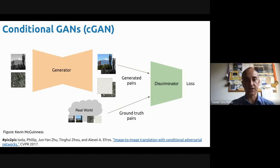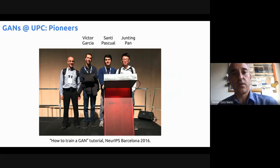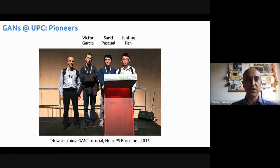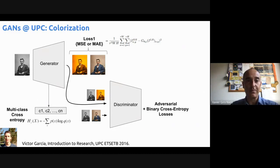Just to finish, I'll briefly present some works developed at UPC that I think it's interesting you're aware of. Let me introduce Victor Garcia, Santi Pascual, and Junting Pan, who as far as I know were pioneers at UPC in applying GANs. Victor was working on actually a Pix2Pix-like approach to solve colorization — in parallel to the real Pix2Pix, managing to do it, but still a very interesting work.